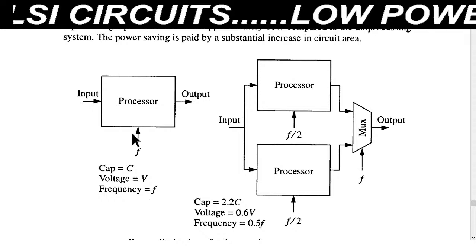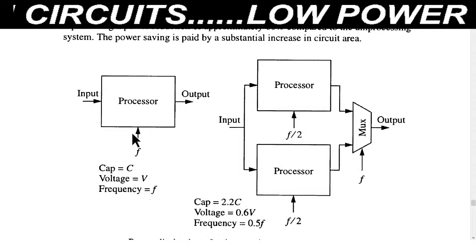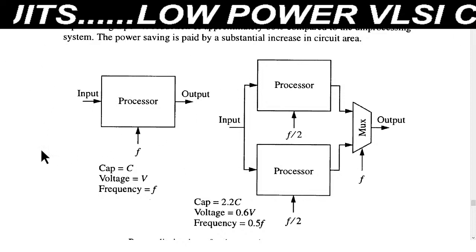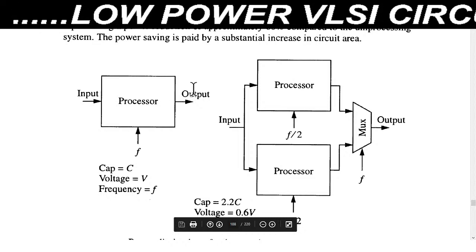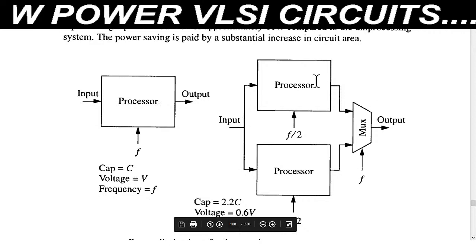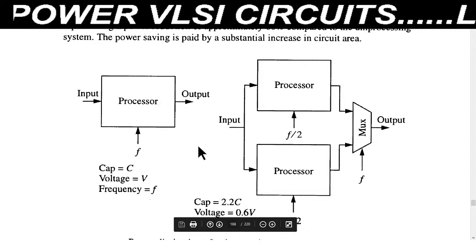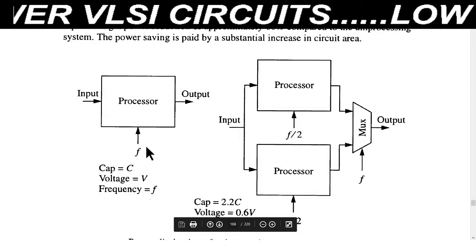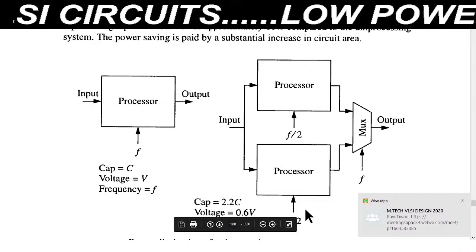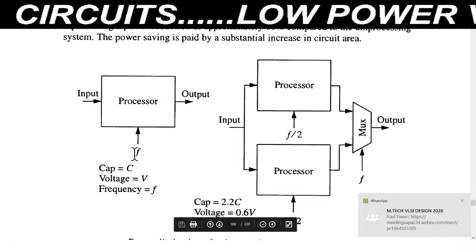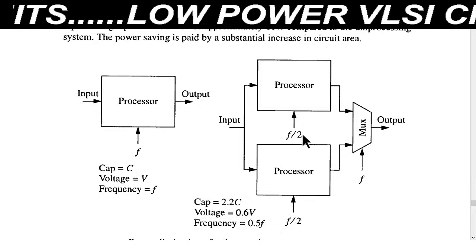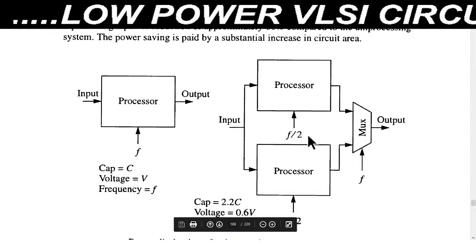The parallel mechanism is basically used in the case of advanced microprocessors. To increase the throughput and computation of the system, we divide this processor into two or four units. If the supply frequency is f at the starting time, then after parallel processing this operating frequency will be halved.